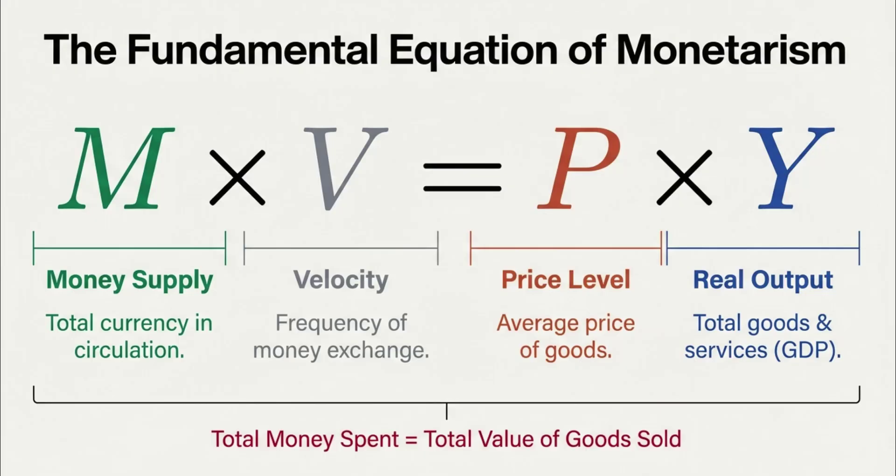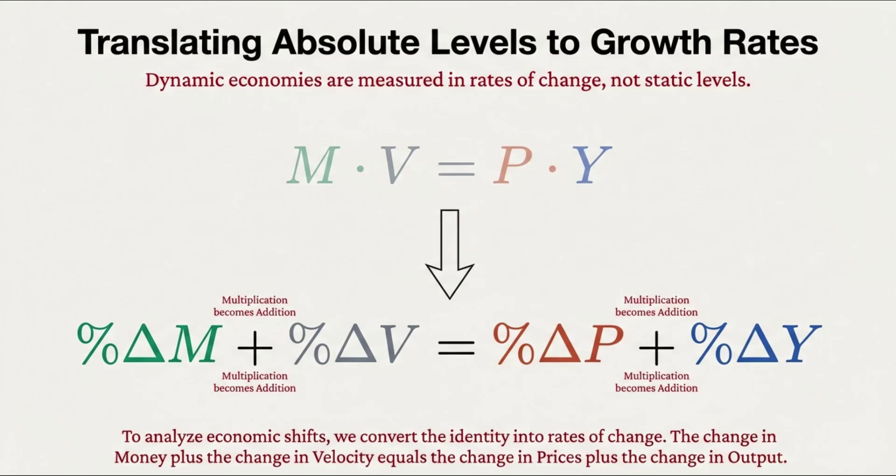And here's where a pretty cool math trick comes in. When you switch from looking at the absolute numbers to looking at their percentage changes, that multiplication formula magically turns into an addition formula. So the change in money supply plus the change in velocity equals the change in prices plus the change in output. This is the formula that's going to help us crack this case.